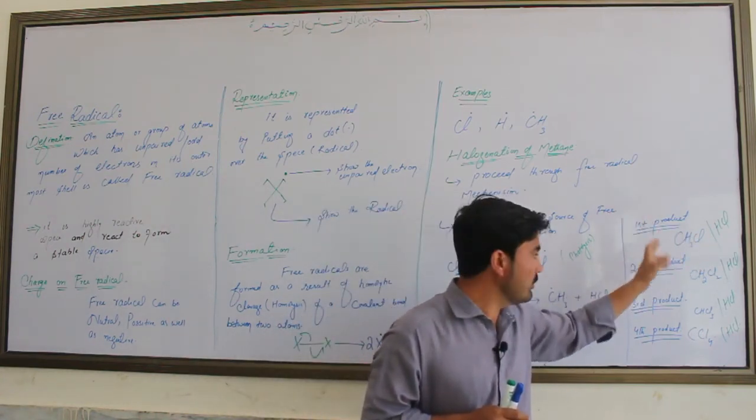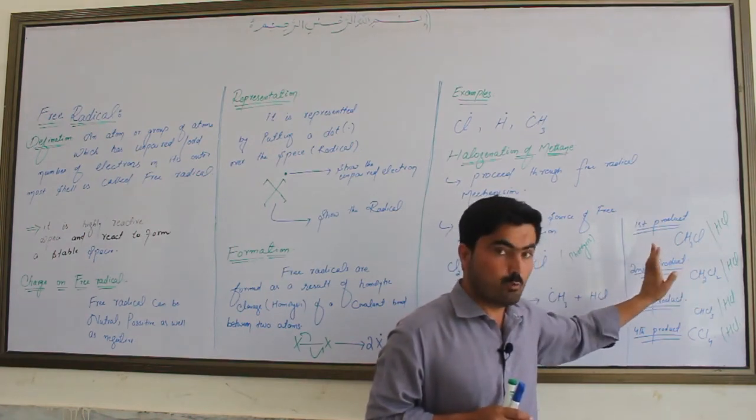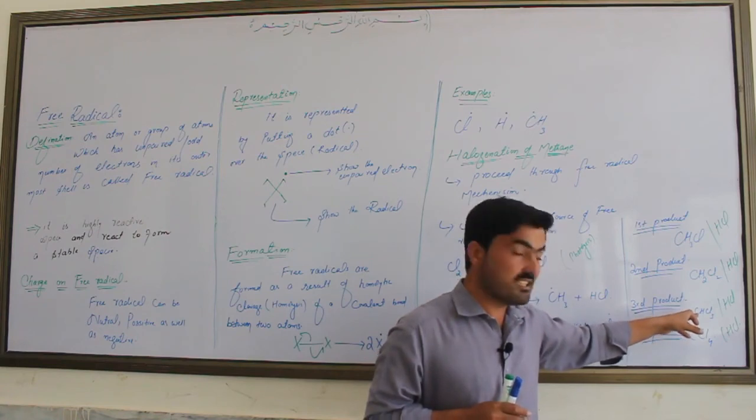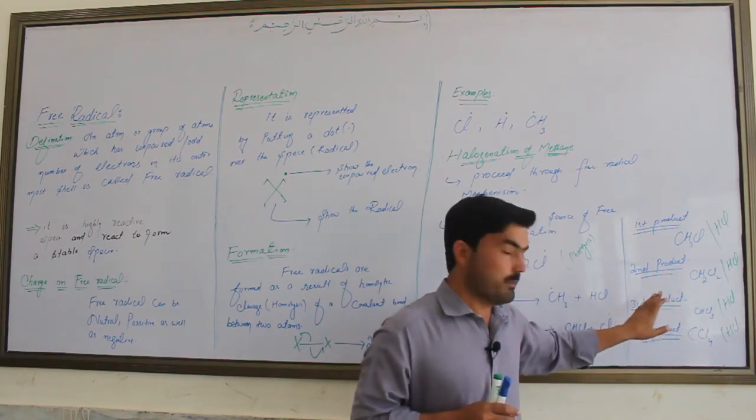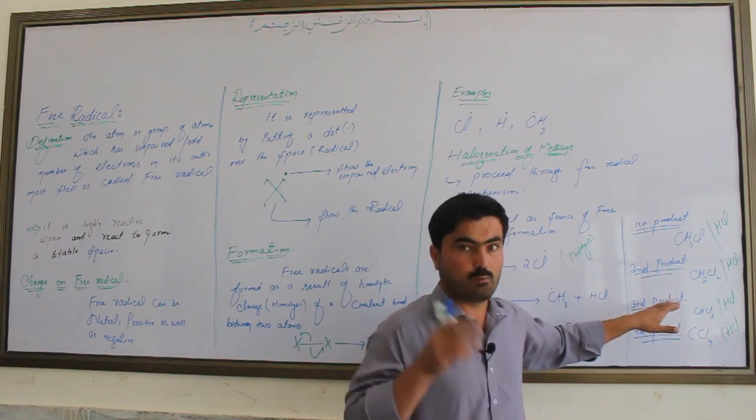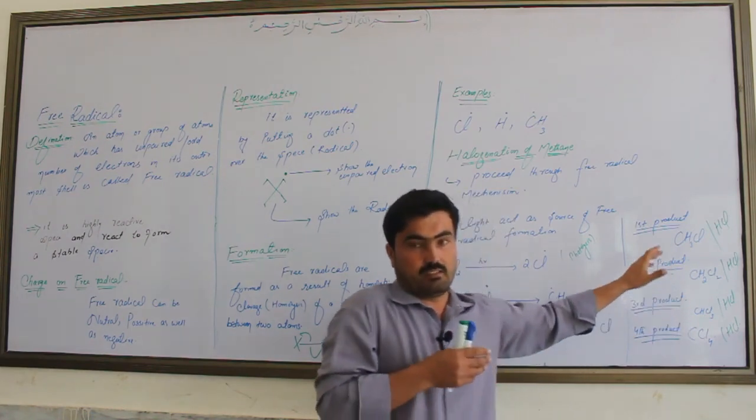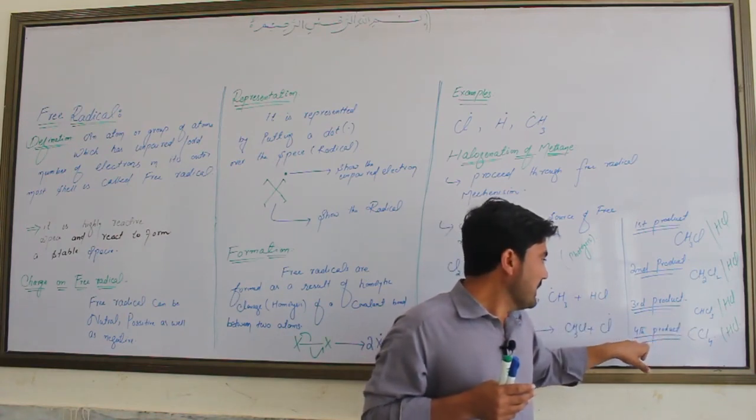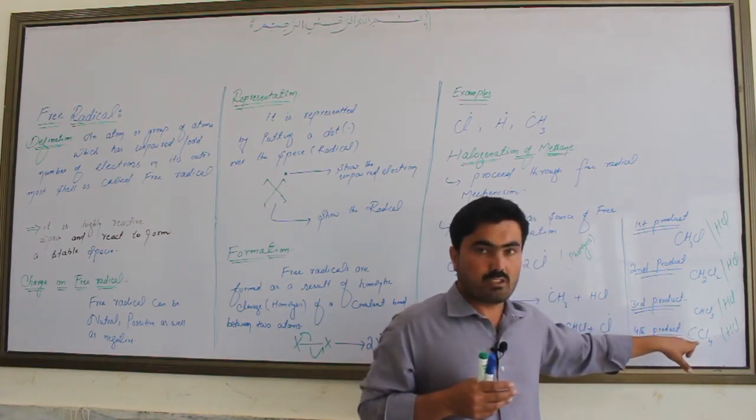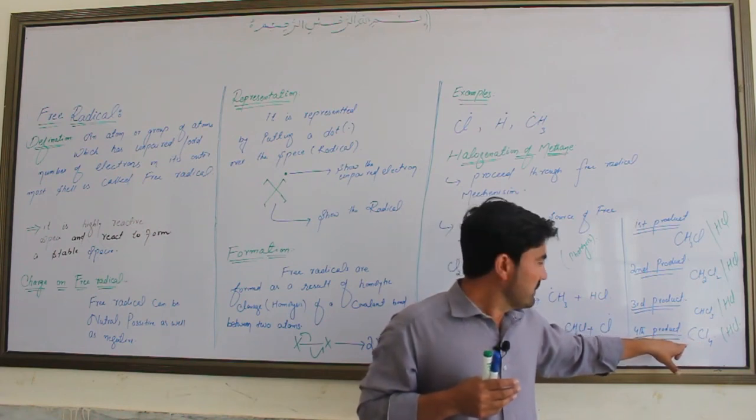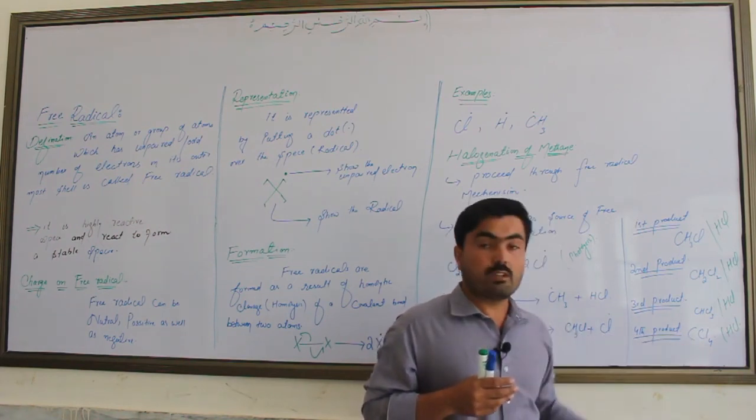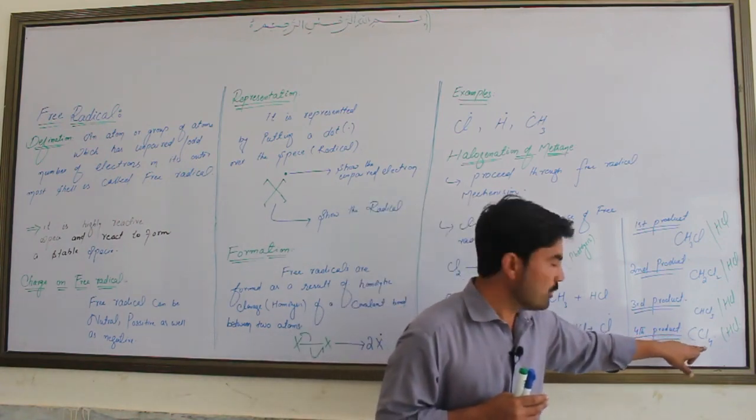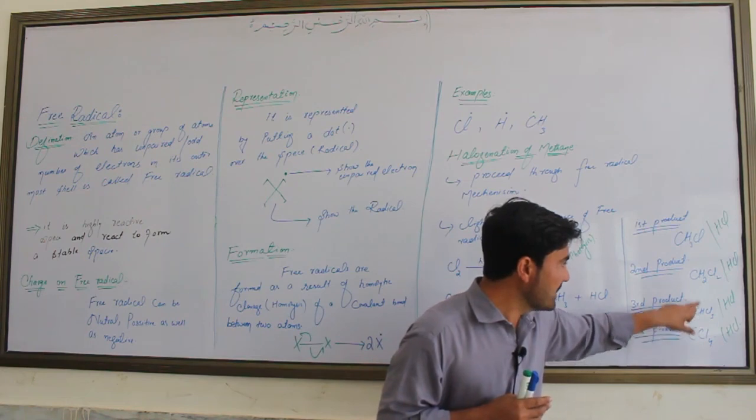When products form, the first is CH3Cl (mono-substituted), second is CH2Cl2 (di-substituted), third is CHCl3 (tri-substituted), and the final product is CCl4 (tetra-substituted carbon tetrachloride).